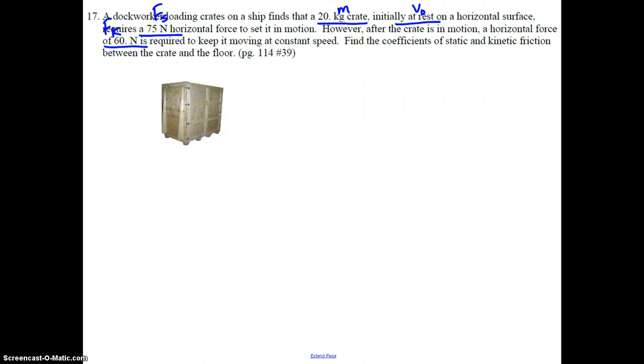That means this would be the kinetic friction required to just keep it moving at constant speed. Find the coefficients of static and kinetic friction. So they want mu_s and mu_k between the crate and the floor.